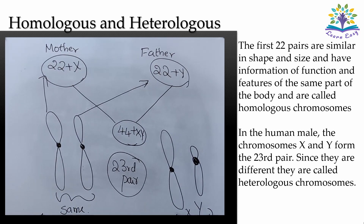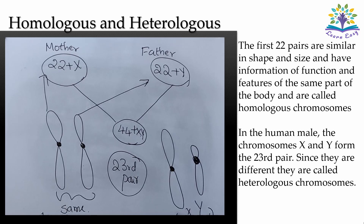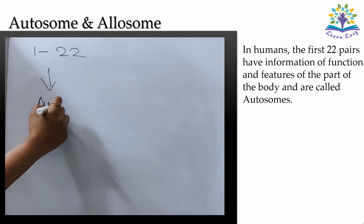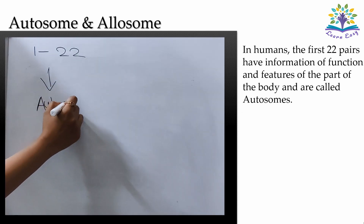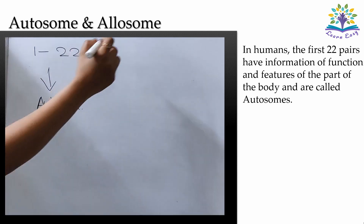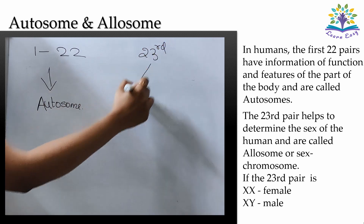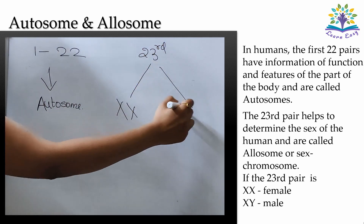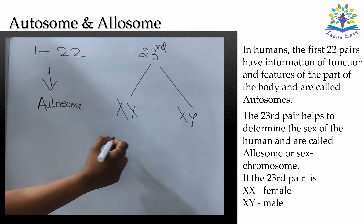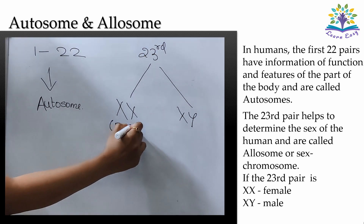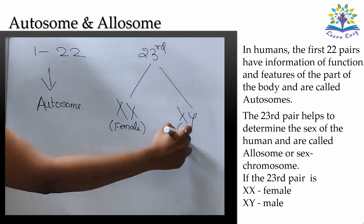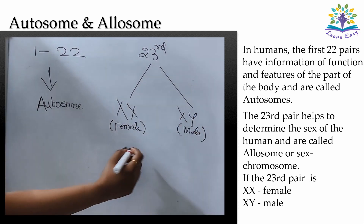So in a human female all the pairs are homologous, and in a human male only the 23rd pair is heterologous. Now let's understand what is meant by autosome and allosome. The first 22 pairs carry information about the function and features of parts of the body — these are called autosomes. The 23rd pair helps determine the sex of the human and is therefore called allosome or sex chromosome. If the 23rd pair is XX it is a female, and if it is XY it is a male.